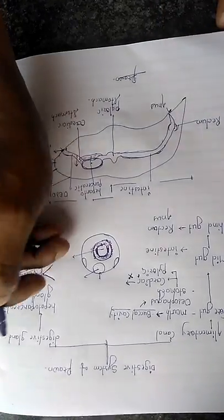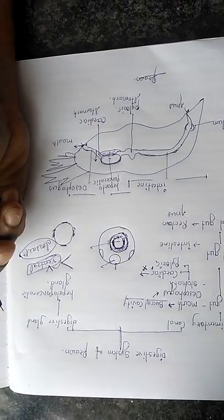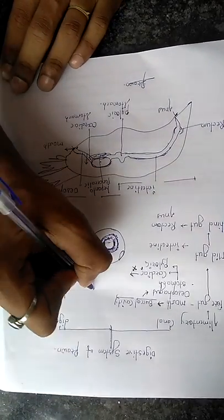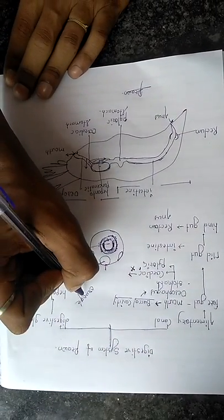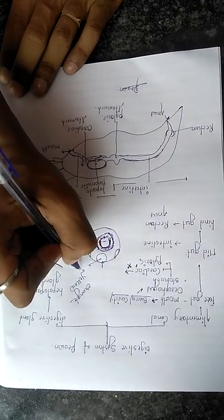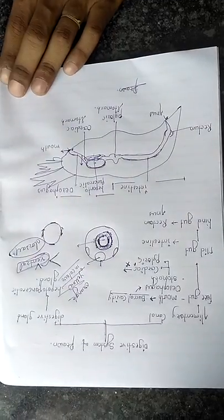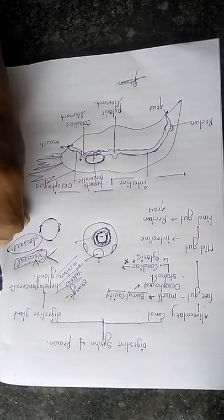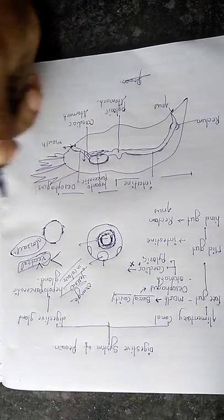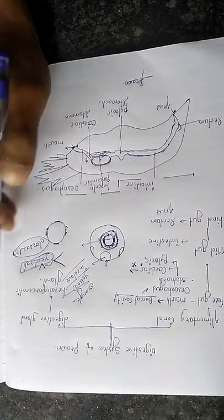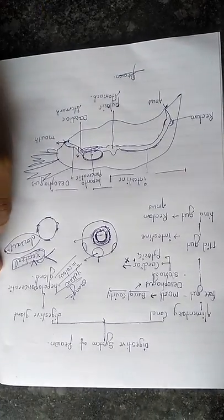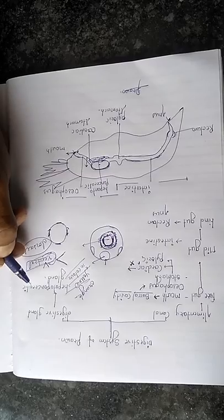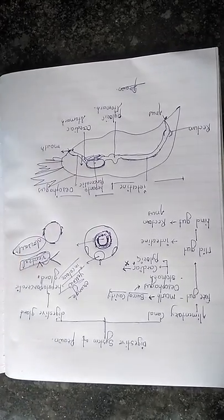The anus is a slit-like aperture and is the exterior opening through which undigested food is expelled from the body. The hepatopancreatic gland is present below the cardiac stomach and is orange-yellow in color. It is a bilobed structure. The hepatopancreatic ducts open into the ventral chamber of the pyloric stomach. The hepatopancreatic gland serves the functions of the liver, pancreas, and also performs storage and absorption.